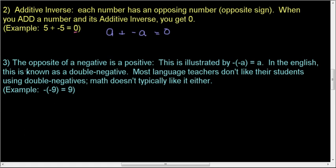Property 3: the opposite of a negative is a positive. This is illustrated by the opposite of negative A is A. I'll explain this in English terms. For other languages, I can't really speak to it since I only took one year of Latin in high school. But in English, we have these really nasty things called double negatives.